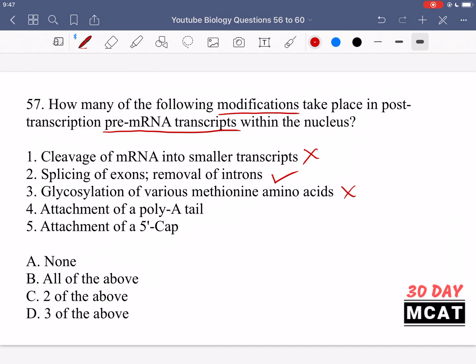Options four and five are correct. We do attach a poly-A tail and we attach a five-prime cap. These are two very important modifications to pre-mRNA - you should definitely recognize these modifications. So three of the five options were correct, so D is our correct answer here.